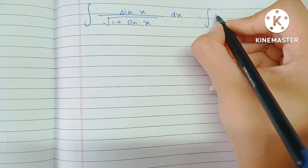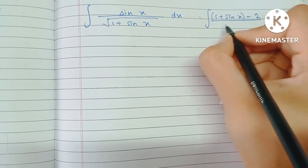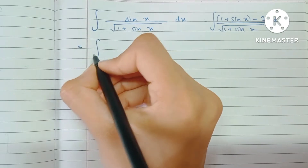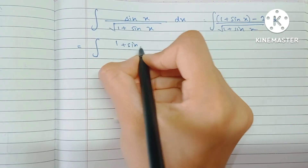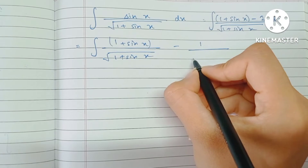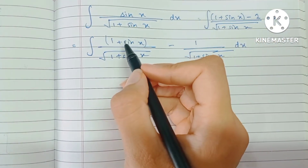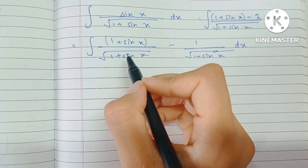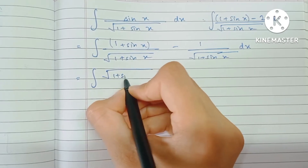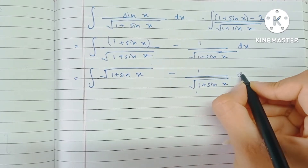We're going to write the numerator as (1 + sin x) minus 1, with the denominator remaining the same. We then separate this into two fractions: the first being (1 + sin x) upon root(1 + sin x), and the second being minus 1 upon root(1 + sin x). In the first fraction, the square of the denominator is in the numerator, so it simplifies to root(1 + sin x), and the second fraction remains the same.